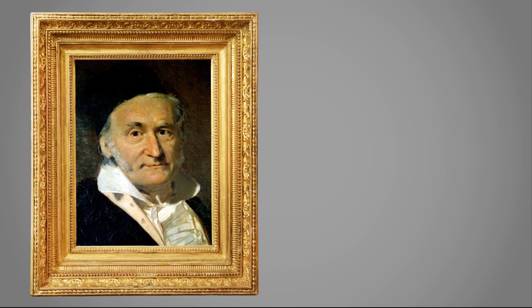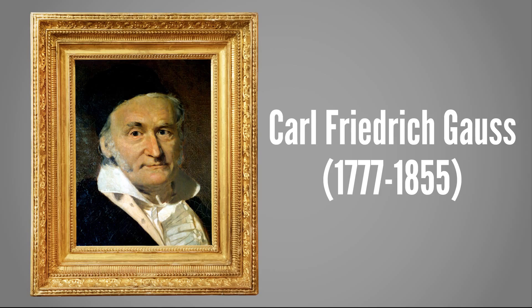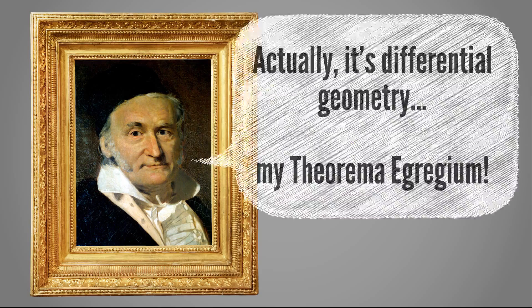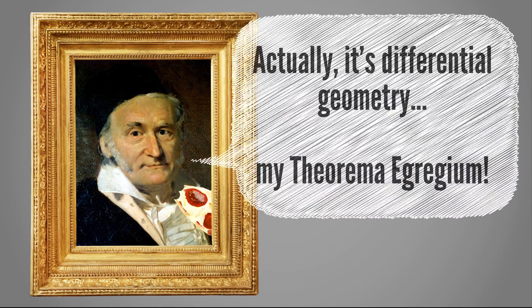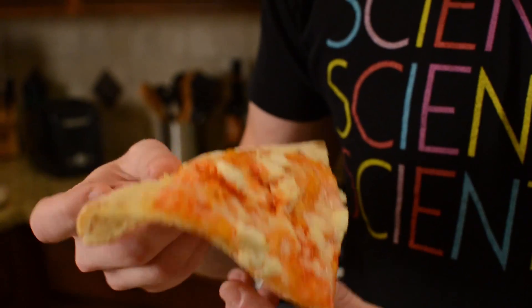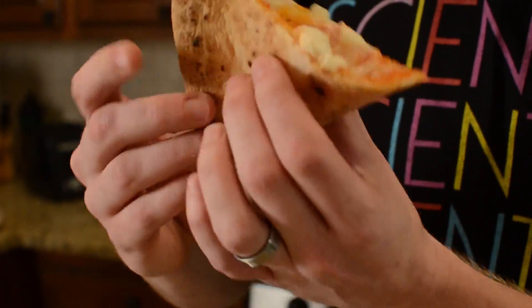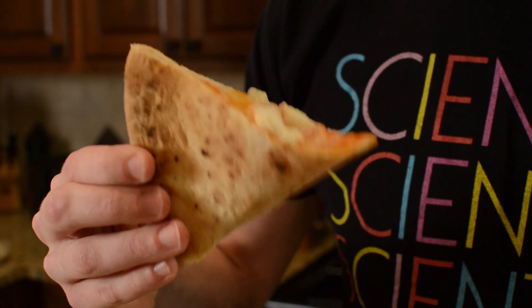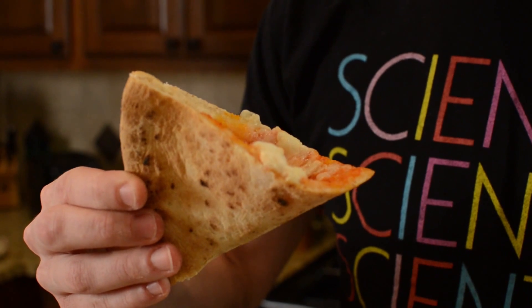In 1827, Carl Friedrich Gauss described why using plain old geometry, and that's why we fold a piece of pizza to keep it from drooping.